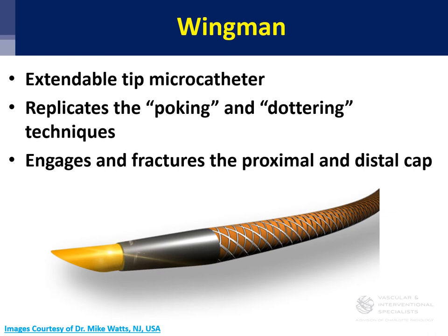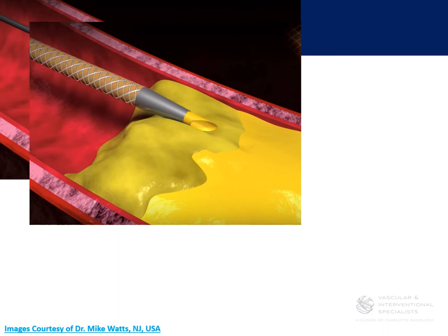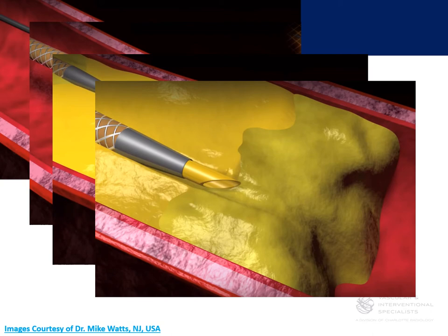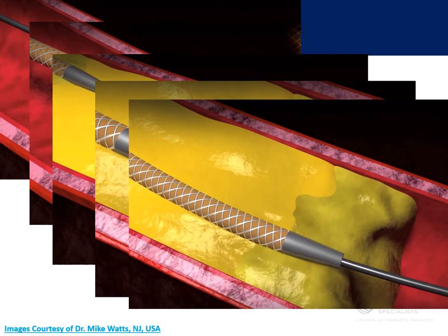The Wingman catheter is a microcatheter that dotters or pokes the CTO — the chronic total occlusion — so that you stay true lumen. It's a way of avoiding subintimal, engaging and fracturing the cap of the CTO. Here's an example: you have a wire that can't be advanced through a CTO, you advance the Wingman, spin it, rotate through the occlusion, follow with a wire, dotter it, and repeat until you break through the distal cap and have true lumen access, avoiding subintimal recanalization.